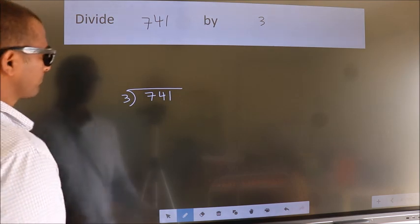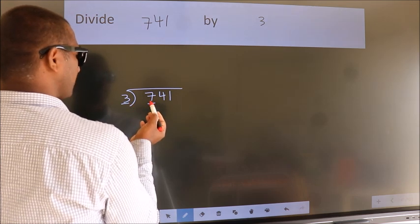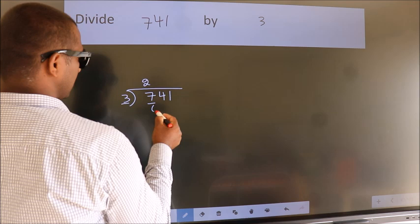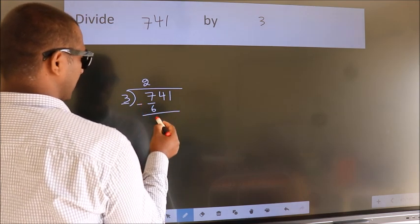Next. Here we have 7. Here 3. A number close to 7 in 3 table is 3 2's 6. Now we should subtract. We get 1.